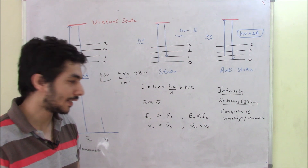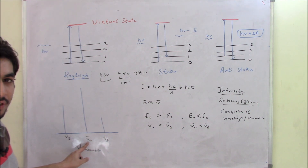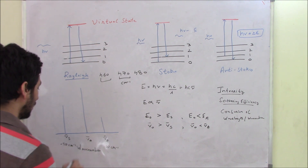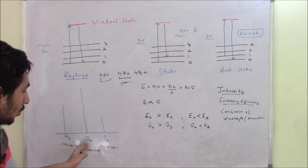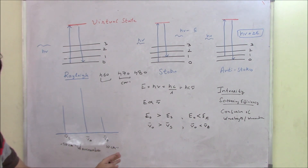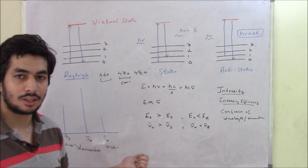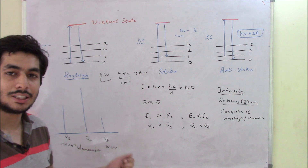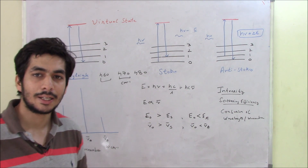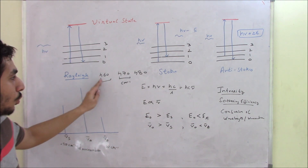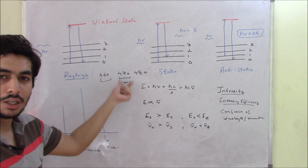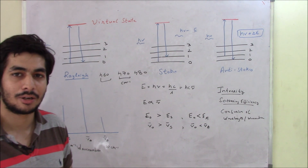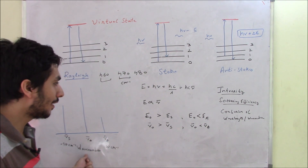This is a reference convention. For example, if the Rayleigh photon has a wave number of 470 cm⁻¹, then 460 cm⁻¹ is the Stokes wave number and 480 cm⁻¹ is the Anti-Stokes wave number. We take V₀ as zero reference, so 480 becomes +10 cm⁻¹ and 460 becomes −10 cm⁻¹. That is why in Raman spectrometers you see negative and positive signs: positive represents Anti-Stokes and negative represents Stokes.